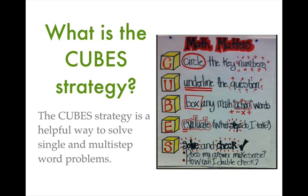So the C stands for circle, U for underline, B for box, E for evaluate, and S for solve and check.